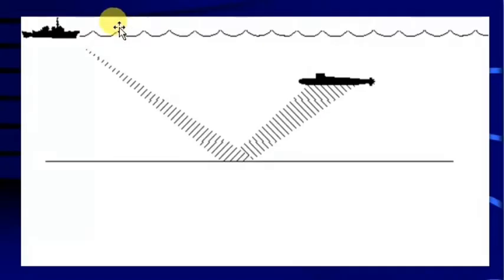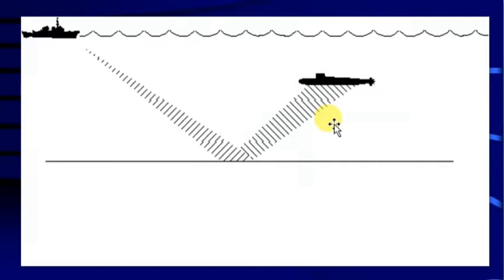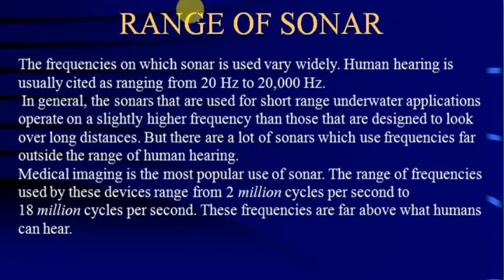The time variation is displayed on the sonar screen by means of a flashing light, LCD, CRT, or other devices, allowing the object to be detected. You can see that a ship is detecting a submarine — it sends sound waves, which reflect off the sea floor and back from the submarine, allowing the ship to detect the submarine underwater.